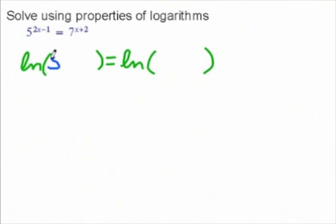The inside over here is 5 raised to the 2x minus 1, and over here we're going to have 7 raised to the x plus 2. By logging both sides, we're not changing the equation at all because we're balancing it all out.